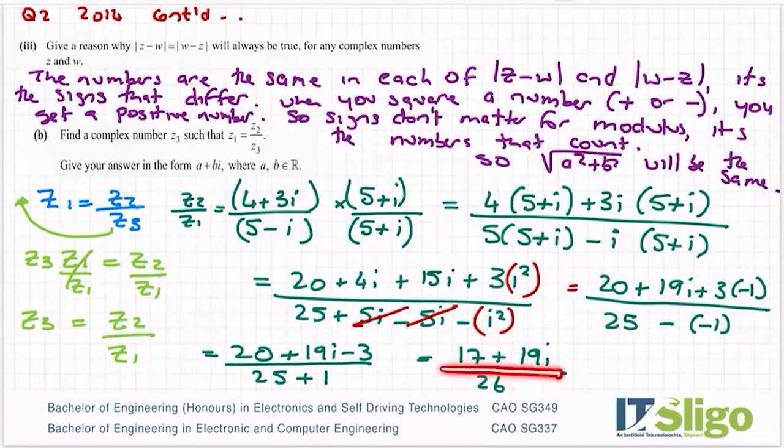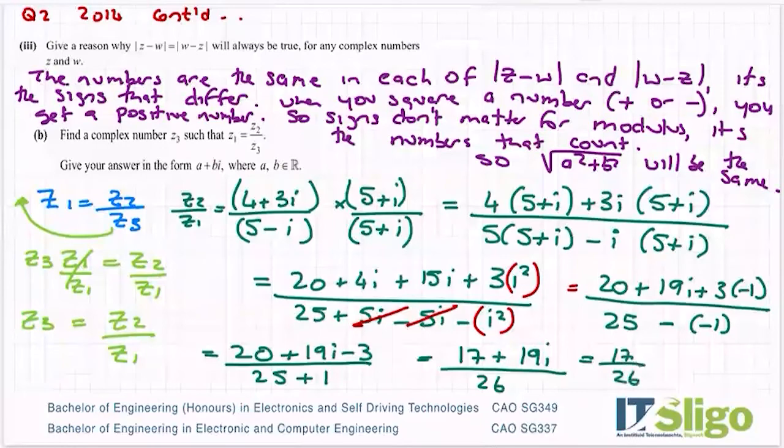So they asked us then to write it as a plus bi. So let's break it out. All of this is over 26, so my real part is 17 over 26, and my imaginary part is 19i over 26. So 17 over 26 plus 19 over 26 i. I'm looking at these two numbers to see, can I simplify them or write them in their simplest form? No, that's them. So that's your answer.